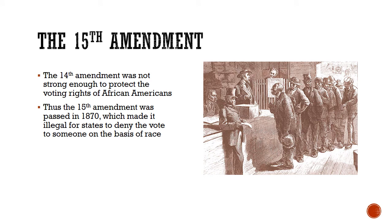The 15th Amendment was enacted a little later because the 14th Amendment was not strong enough to protect the voting rights of African Americans. The 15th Amendment was passed in 1870, and it made it illegal for states to deny the vote to someone on the basis of race. However, as we will see later, it was not sufficient either, because Southern states would make up other reasons — apparently unrelated to race — that would effectively block Black voters from voting.